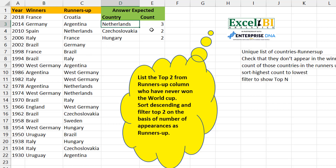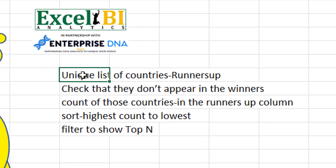From those filtered countries, sort descending and filter the top two based on number of appearances as runners-up. From the result you can see three countries tying - Czech and Hungary both appeared two times as runners-up but never won. My workflow: get a unique list from runners-up, check they don't appear in winners, count appearances, then sort highest to lowest and filter top two.